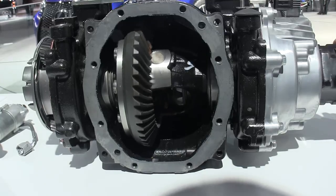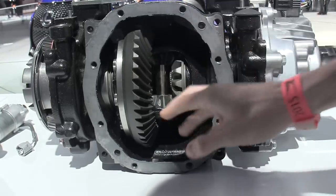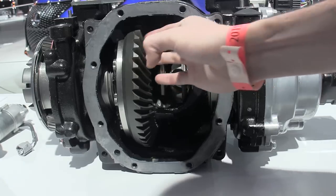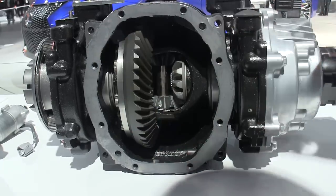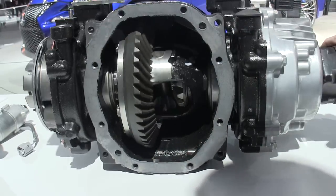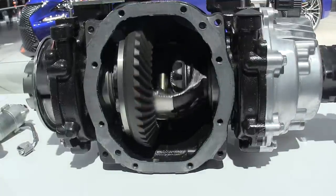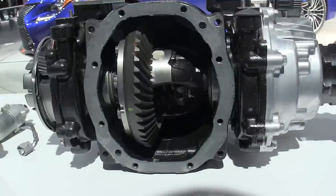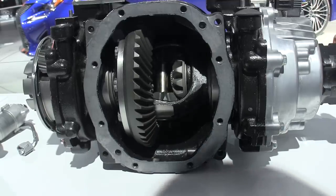But what we are looking at is very similar to an open differential except that it has two clutch packs and planetary gear sets on either side of it. So in the center here you've got your ring gear which the pinion matches up to and it rotates this center differential here which is essentially an open differential.